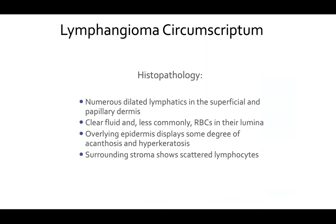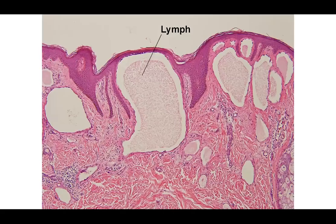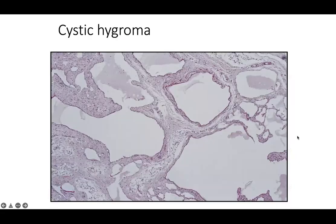On histopathology, lymphangioma circumscriptum shows numerous dilated lymphatics in the superficial and papillary dermis filled with clear lymphatic fluid but can have red blood cells in their lumina. The overlying epidermis shows acanthosis and hyperkeratosis, and the surrounding stroma shows scattered lymphocytes. Here you see a dilated thin-walled vessel mostly filled with lymph fluid, in contrast to a thin-walled capillary filled with red blood cells. Cystic hygroma is a deeper-seated lesion — a deep malformation of thin-walled endothelial cells. You would confirm lymphatic nature with D2-40 podoplanin staining.